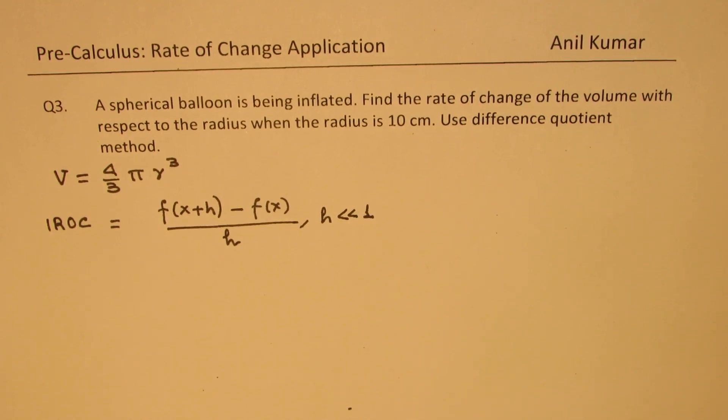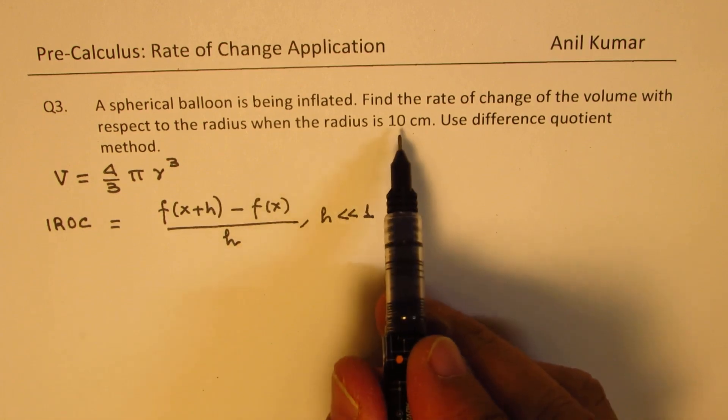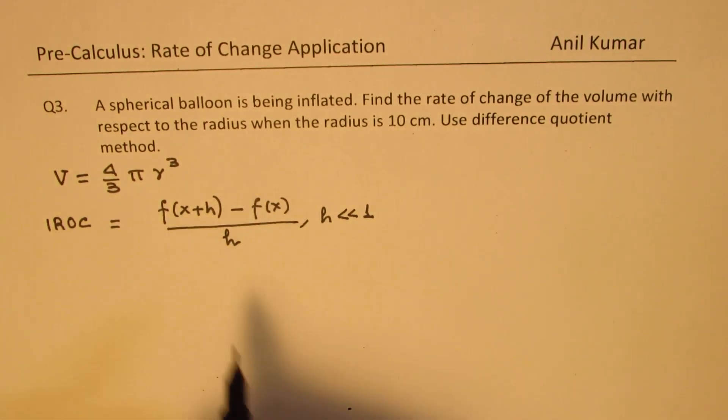Now in our case radius is given to us as 10. We'll substitute this value later. We'll just find a general expression.